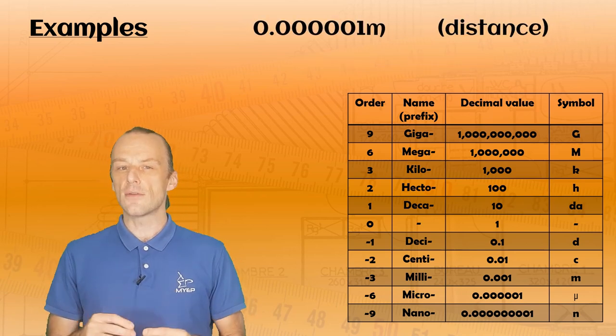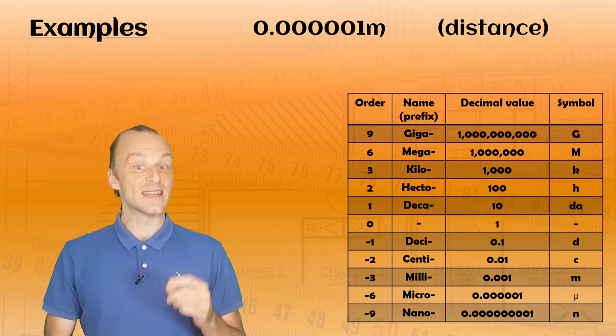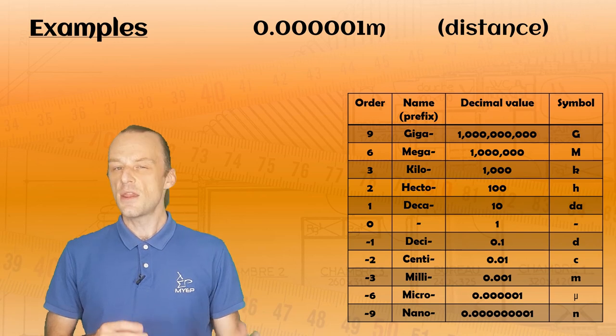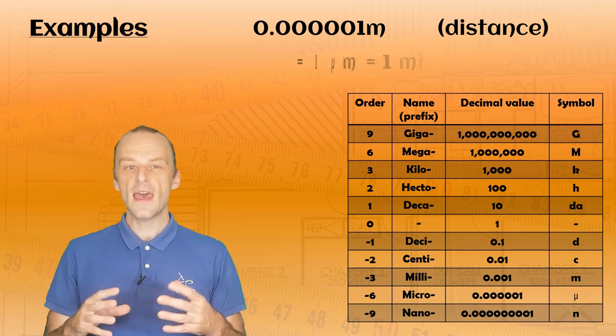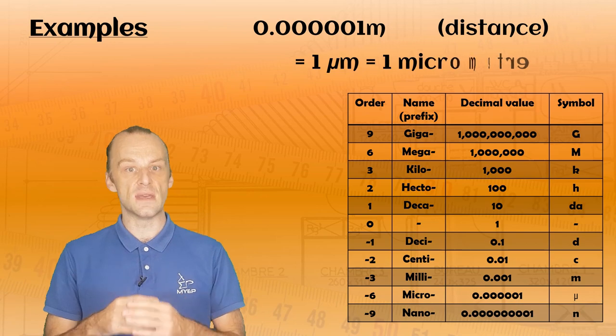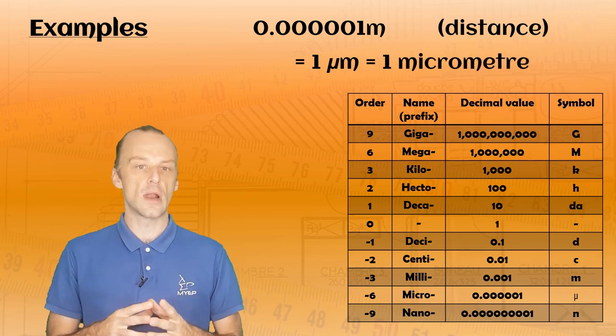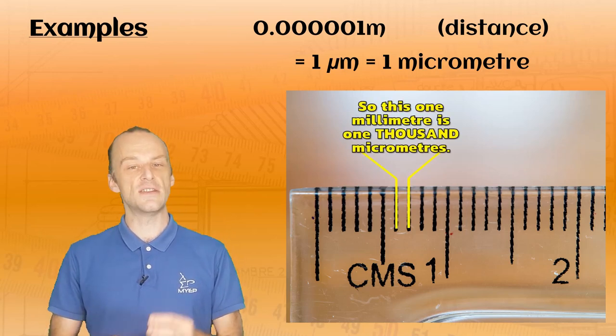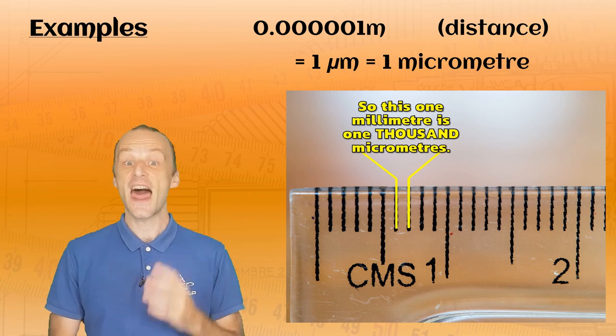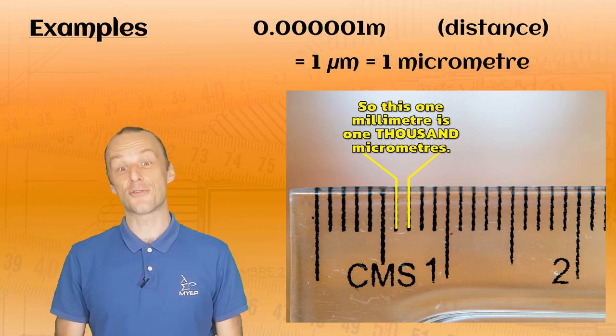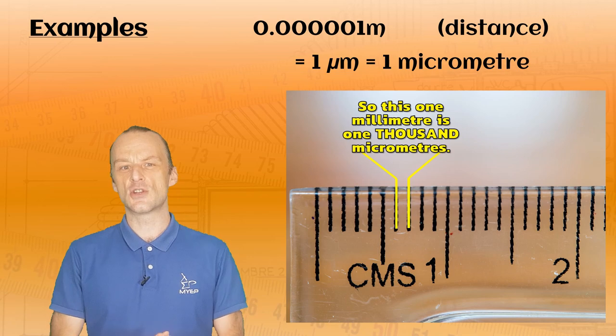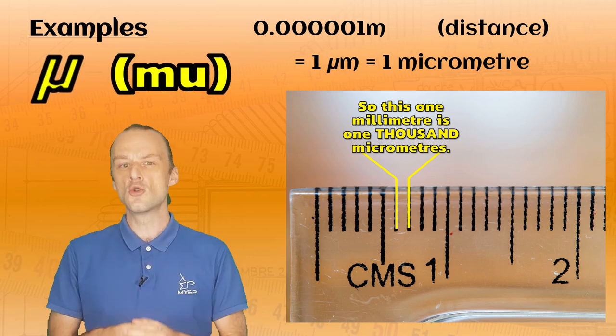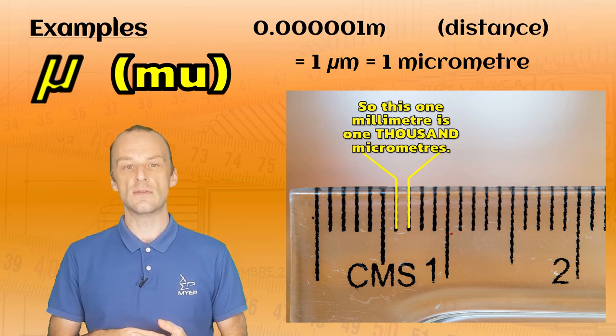And finally, what about this one? 0.0000001 meters of distance. This one is a little bit harder, but in fact, this is one micrometre. It is one million times smaller than a meter. Imagine that you look at one millimetre on your ruler, and you divide that into one thousand pieces. That's how small the micrometre is. It also has a strange symbol. This is the Greek letter mu, but we can use it just like normal letters when we are writing units like this.